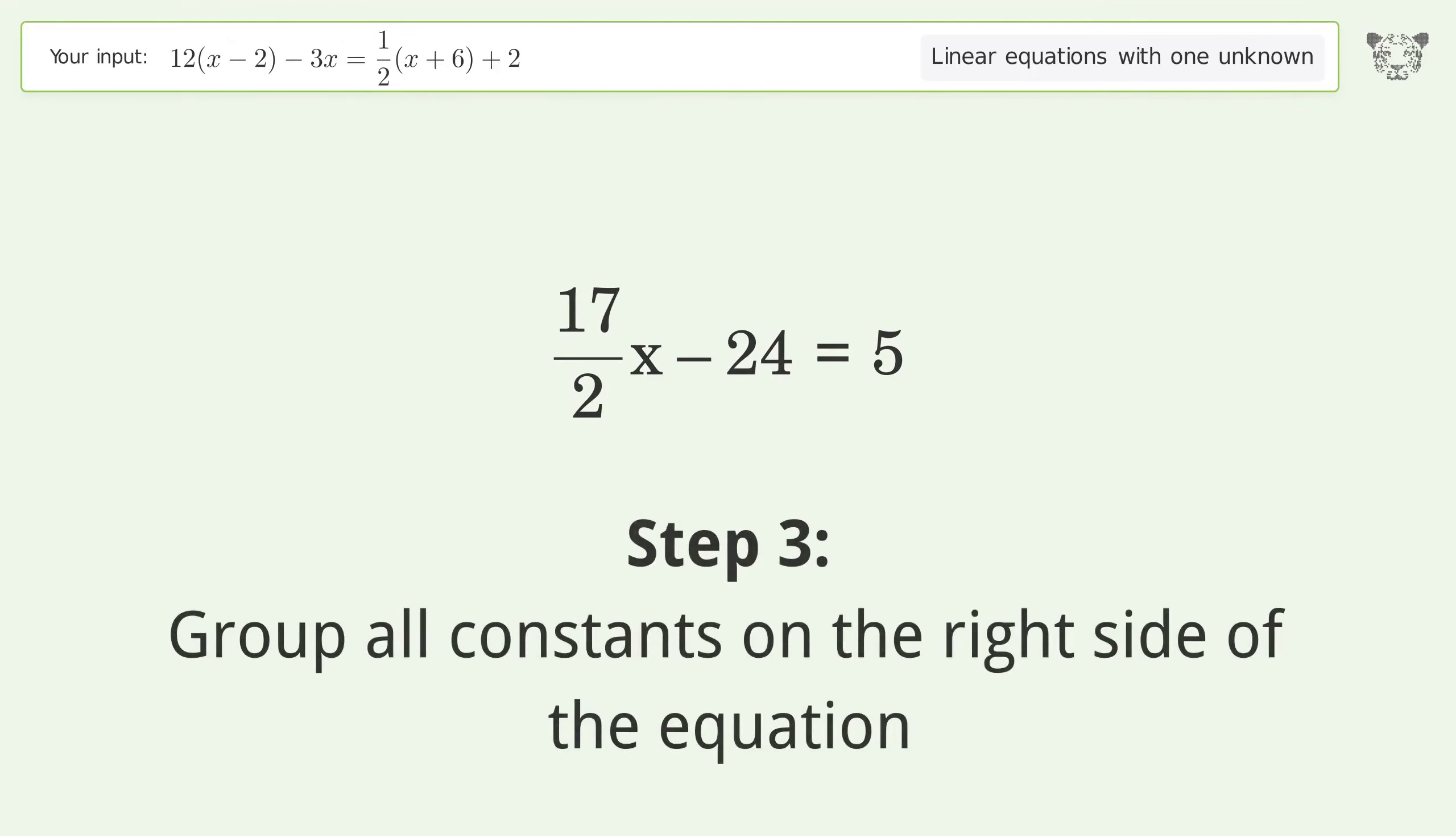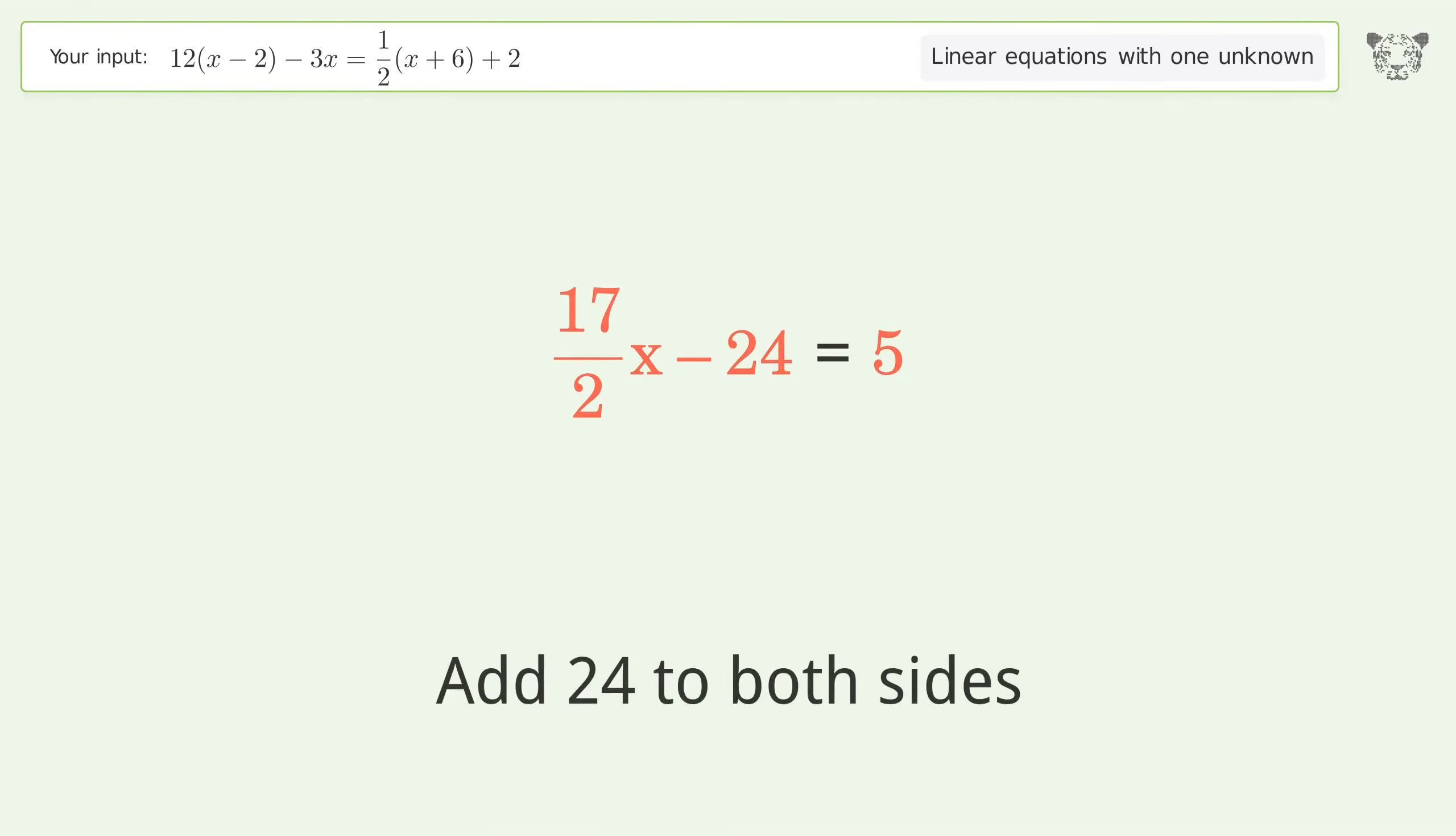Group all constants on the right side of the equation. Add 24 to both sides. Simplify the arithmetic.